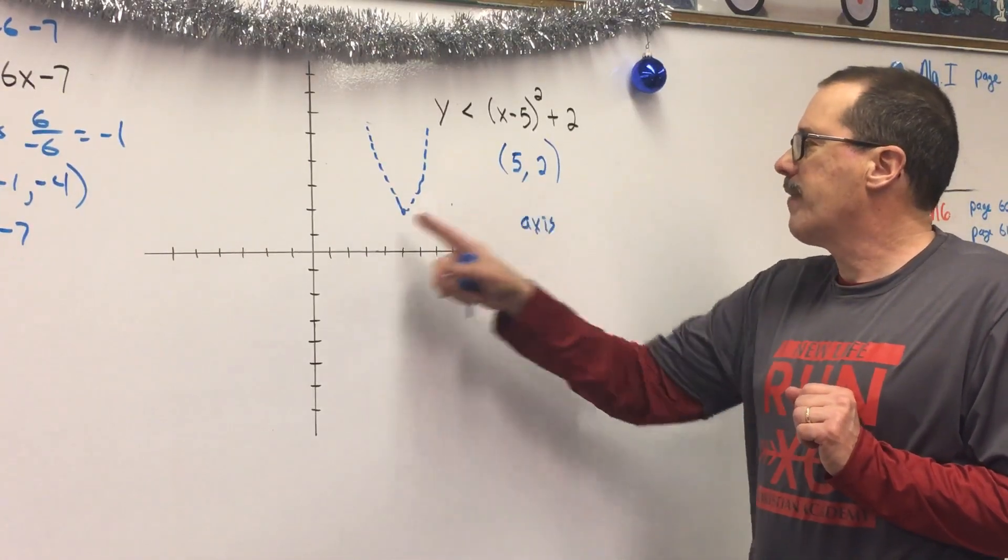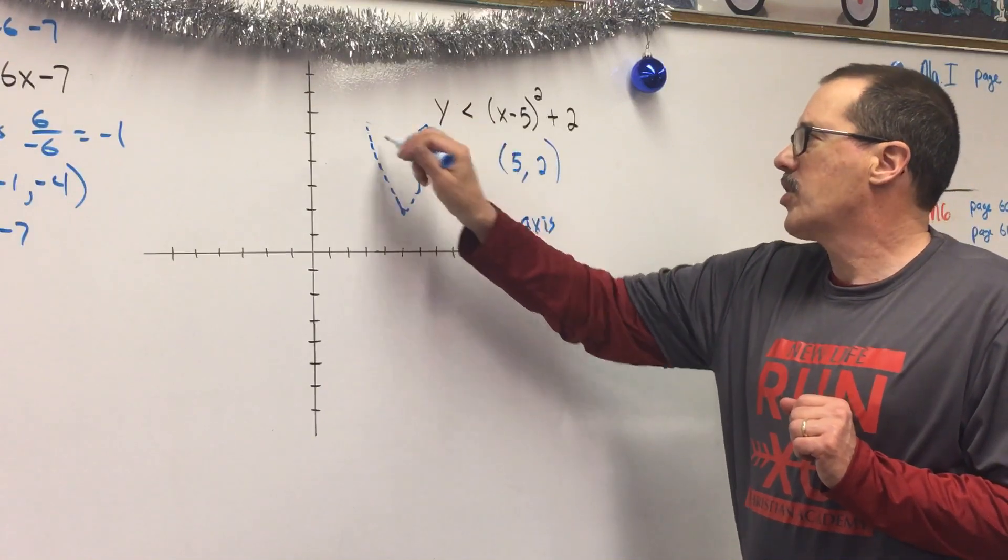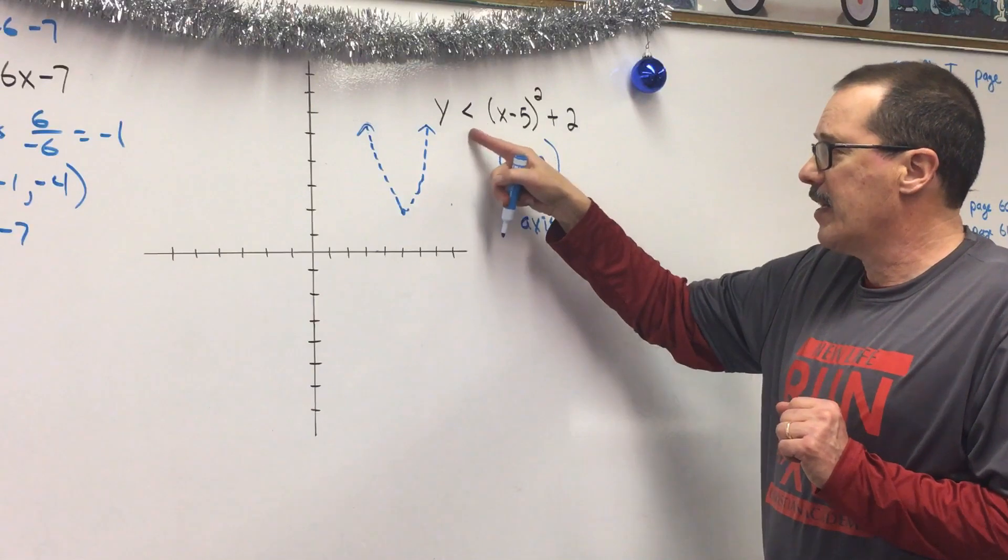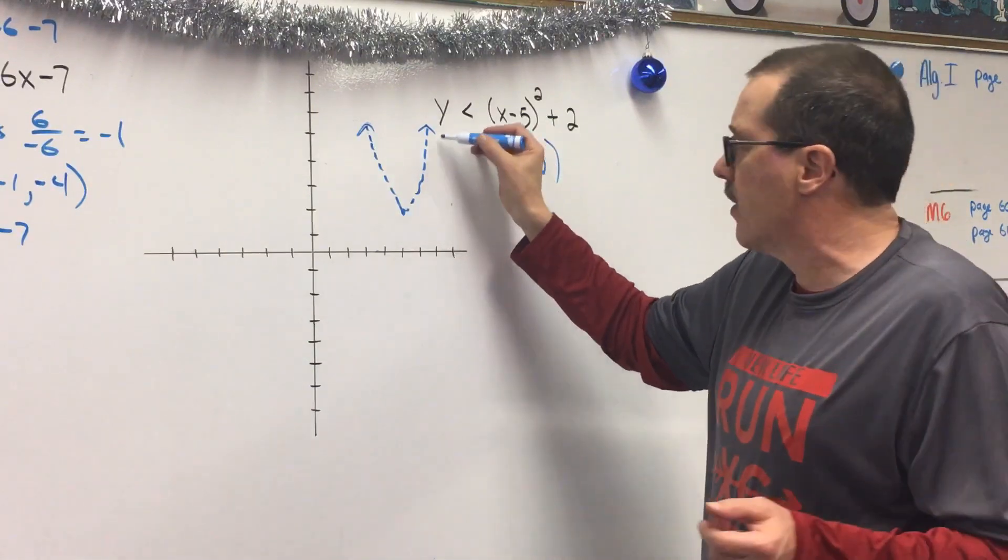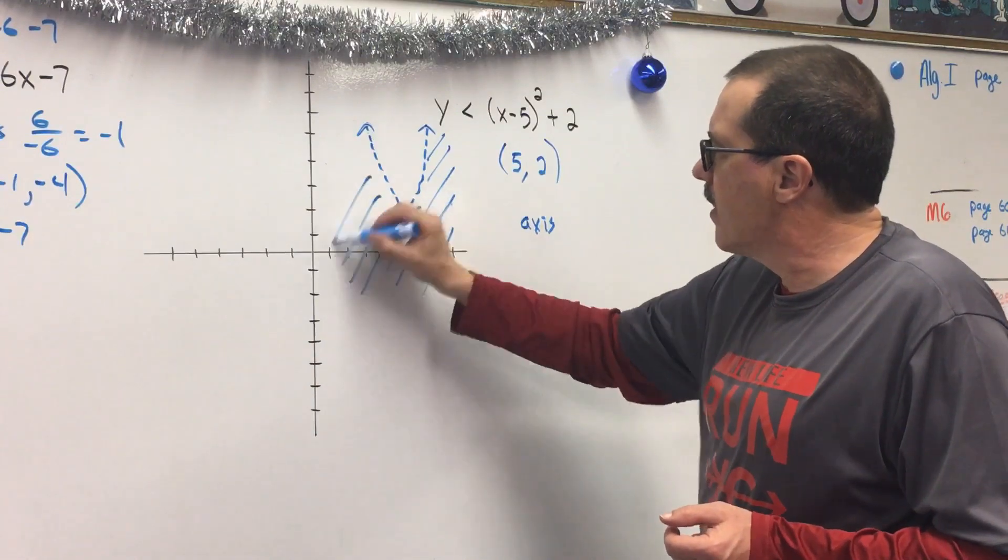The vertex is at (5, -2). It's going to be a dotted line because it's less than. It's going to open up because it's a positive here. Now this time it says less than, so where you would shade on this one is actually underneath the parabola itself.